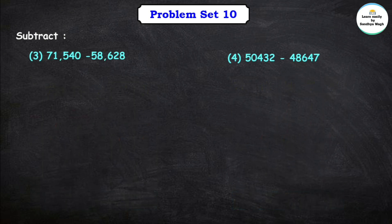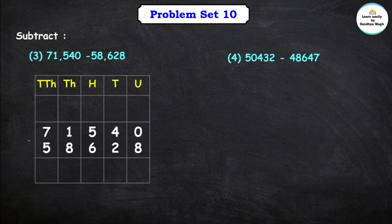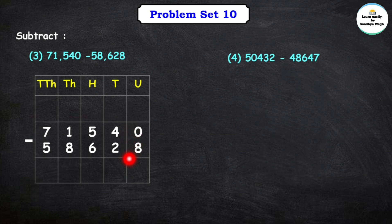Next, question number 3: 71,540 minus 58,628. Let's subtract the units place first. In the units place we have 0 and 8. We have to subtract 8 from 0, but we cannot. We need to borrow from the next digit — the tens place.